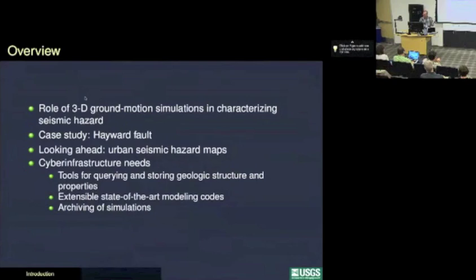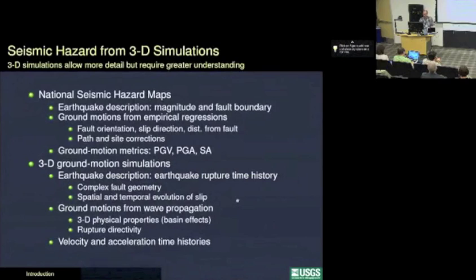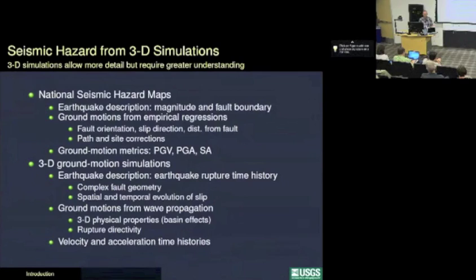Currently in seismic hazard, especially in the current national seismic hazard maps, they use a very simple description of earthquakes — basically the magnitude and a very basic geometry of the fault, so the length and width of the fault. The ground motions are computed from empirical regressions that take into account the orientation of the fault, the slip direction, and the distance from the fault. They throw in some path and site corrections to account for the geology, and generally only look at a very few ground motion metrics: peak ground acceleration, peak ground velocity, and spectral acceleration at a few different periods to incorporate the fact that high frequencies and long periods due to basin amplification may vary.